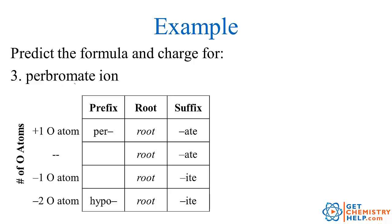How about perbromate? Per- means we gained an oxygen. What's bromate? Bromate is on the outside of the box, so three oxygens, and in the first column so one negative. Going up to perbromate: instead of BrO3 negative, we add an oxygen, so it must be BrO4 negative.